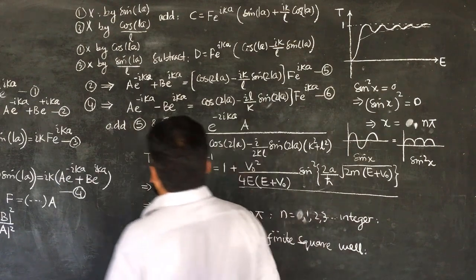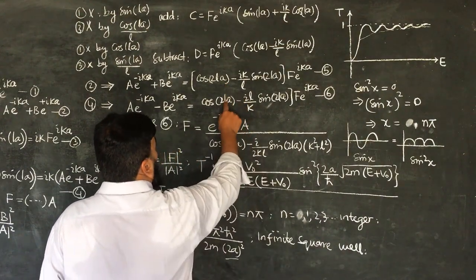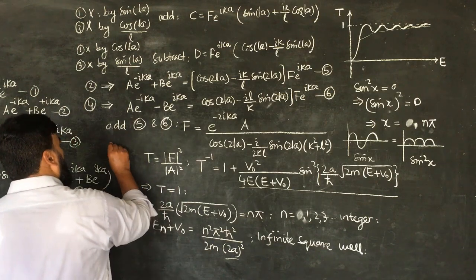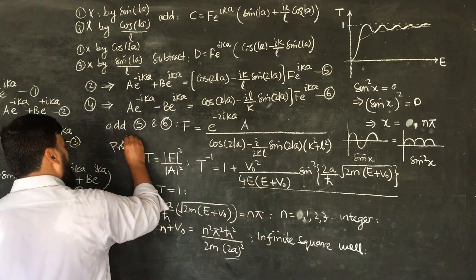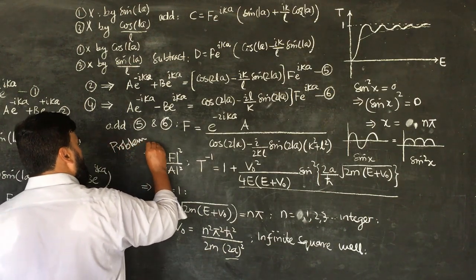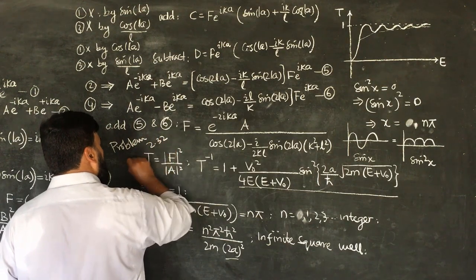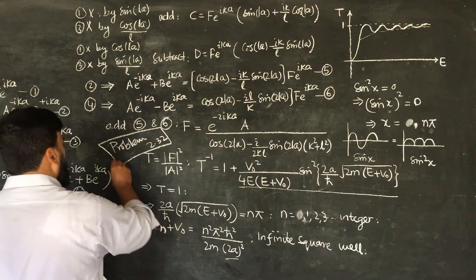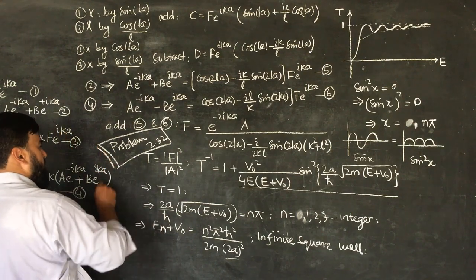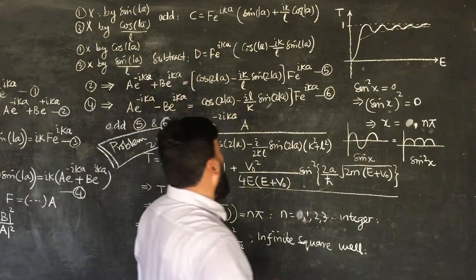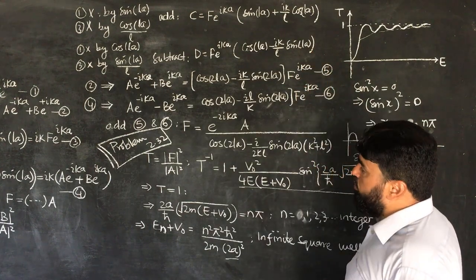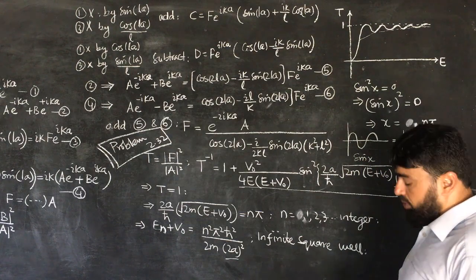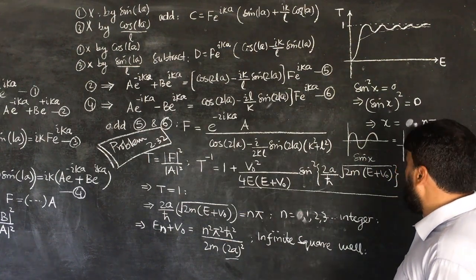Finding all these constants is actually problem 2.32. One can solve that problem in order to find out these constants. I have done the major steps; the individual steps and simplification one can do while solving problem 2.32.